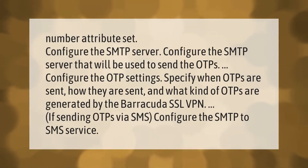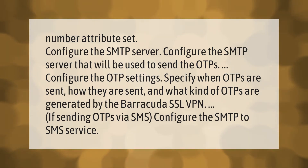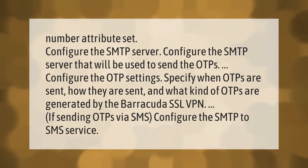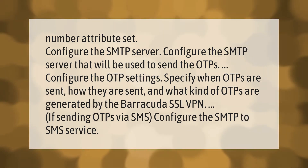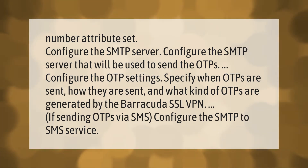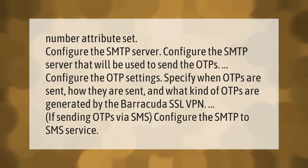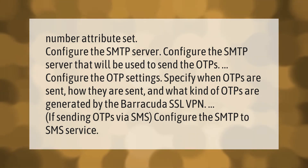Configure the SMTP server that will be used to send the OTPs. Then configure the OTP settings to specify when OTPs are sent, how they are sent, and what kind of OTPs are generated by the Barracuda SSL VPN. If sending OTPs via SMS, configure the SMTP-to-SMS service.